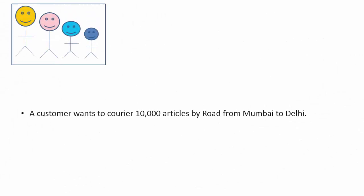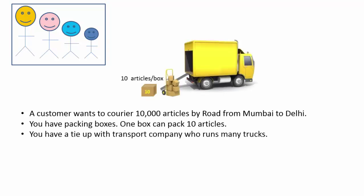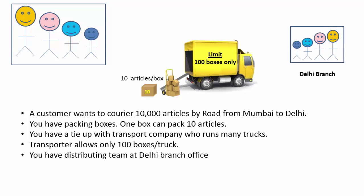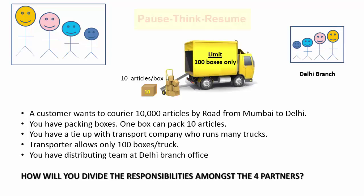Now, assume that you have started a courier company with three more partners. A customer wants to courier 10,000 articles by road from Mumbai to Delhi. You have packing boxes. One box can pack 10 articles. Your company has a tie up with transport company who runs many trucks. Transporter allow only 100 boxes per truck. You have a distributing team at Delhi branch office. How will you divide the responsibilities among the four partners at your branch office?